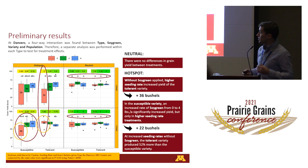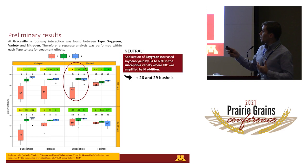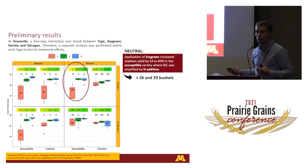Third, at increased seeding rates and without soy green application, the tolerant variety produced 52 percent more than the susceptible variety. From a farmer's standpoint, if the farmer decides not to apply soy green because it's too expensive but is willing to plant higher seeding rates, planting a tolerant variety should be considered because higher yields should be expected.